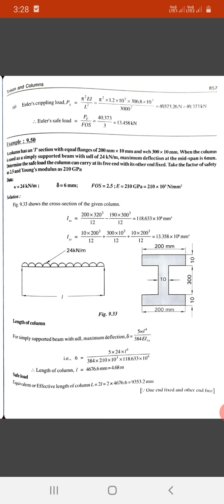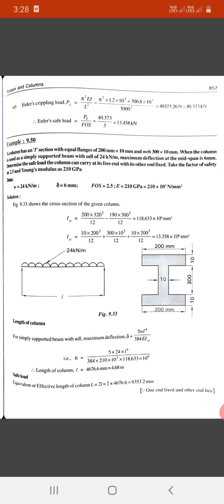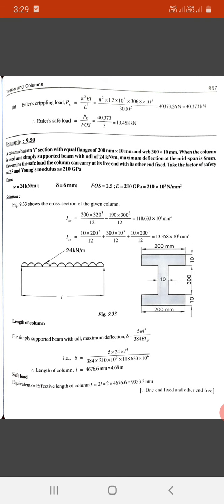Delta equals 5wL to the 4 upon 384EI. Ixx equals 5 into 24, L to the 4, upon 384 into 210 into 10 to the 3 into 118.633 times 10 to the 6. Therefore, length of the column L is 4676.67 mm.